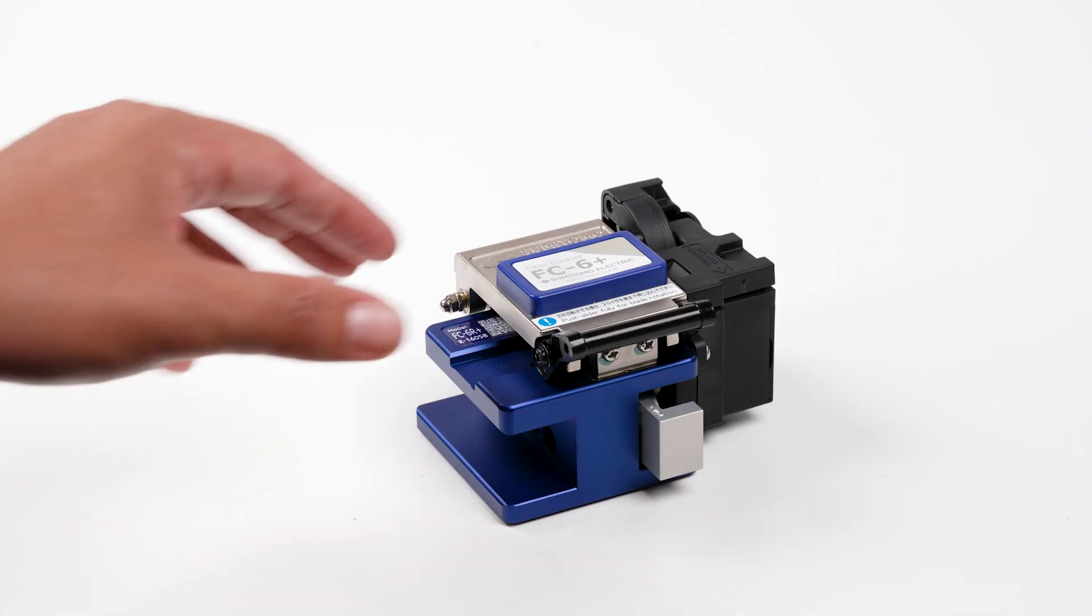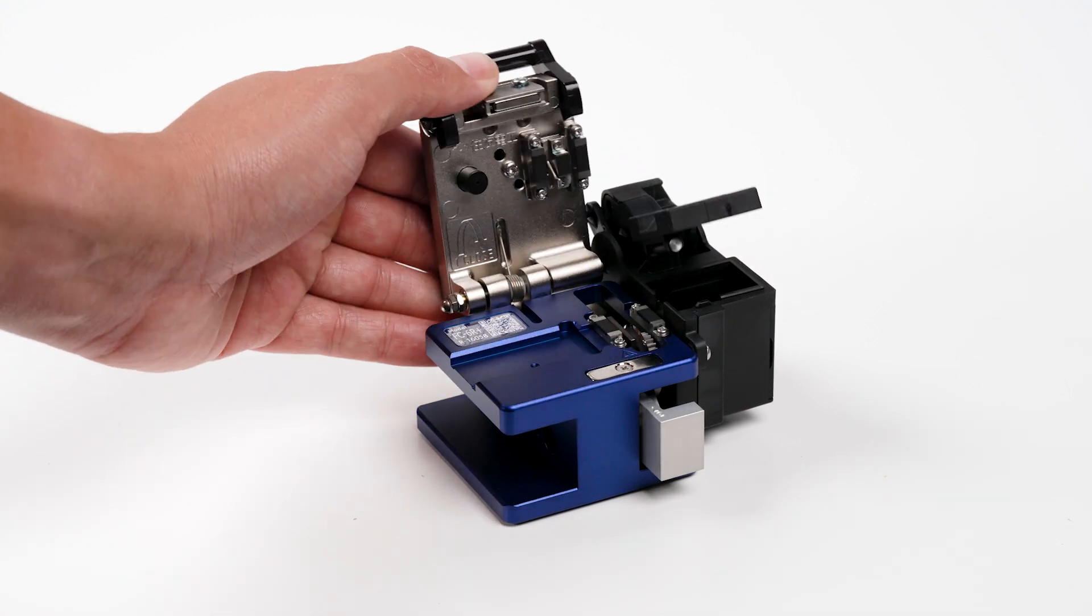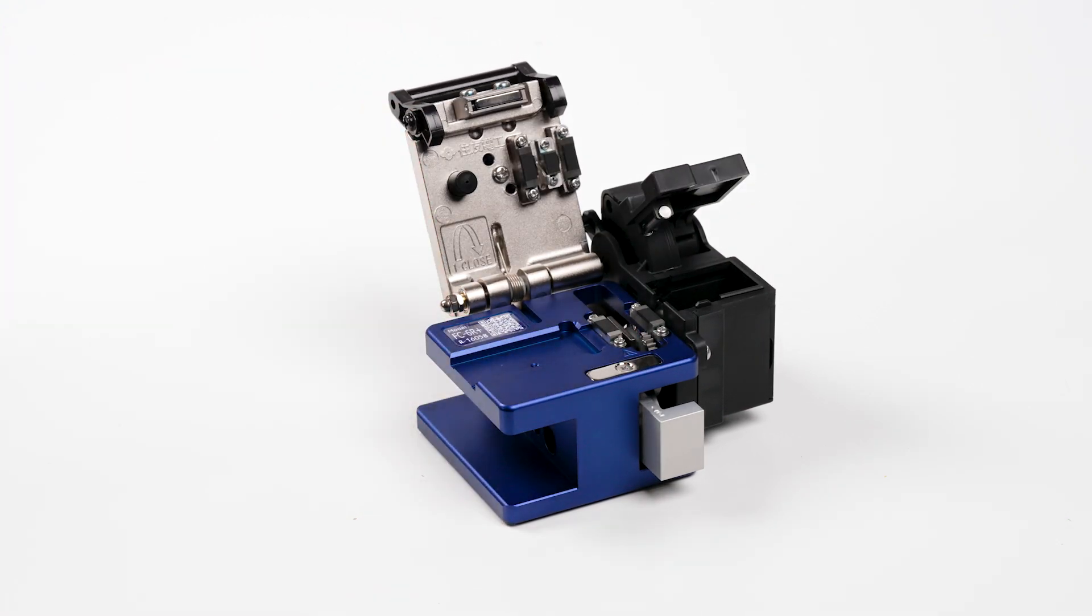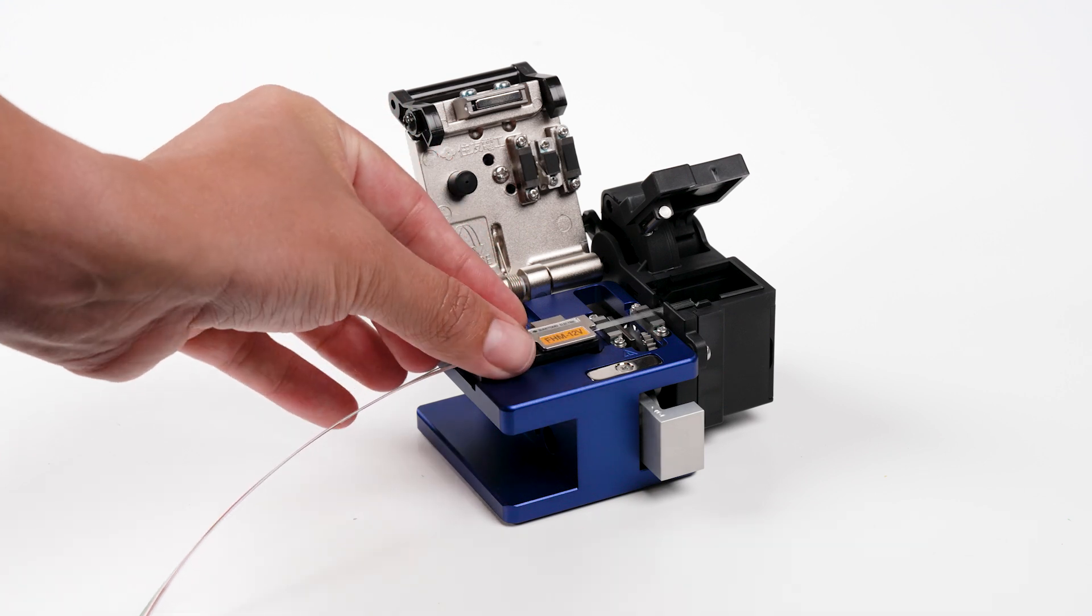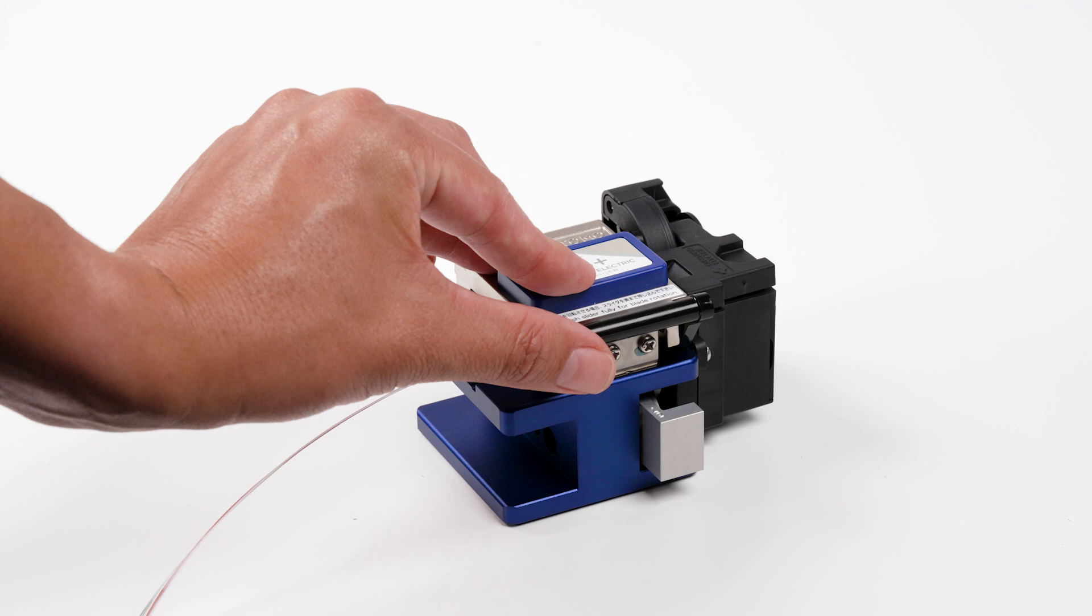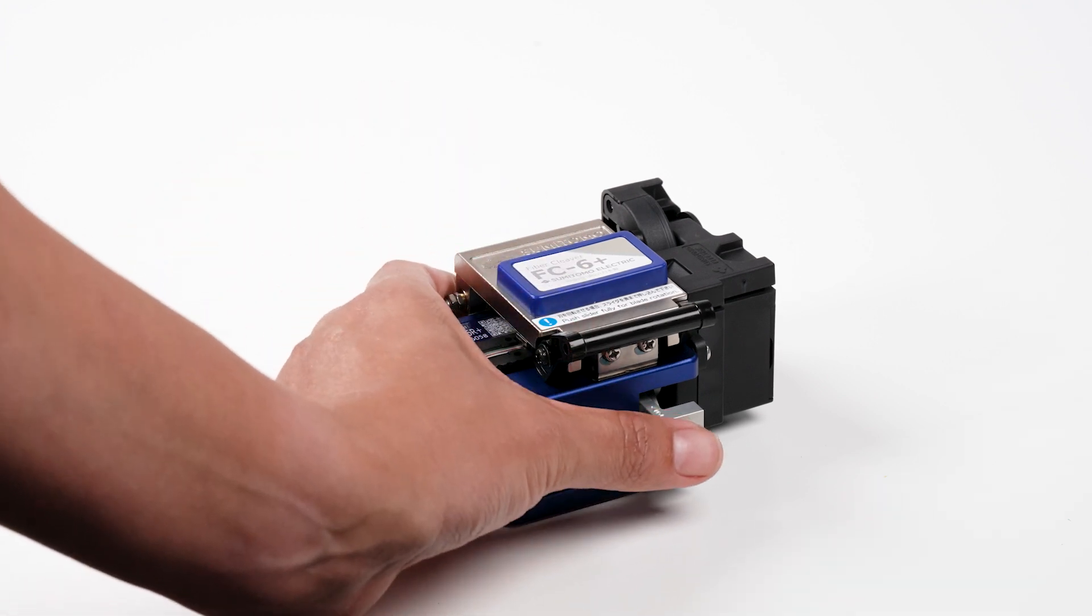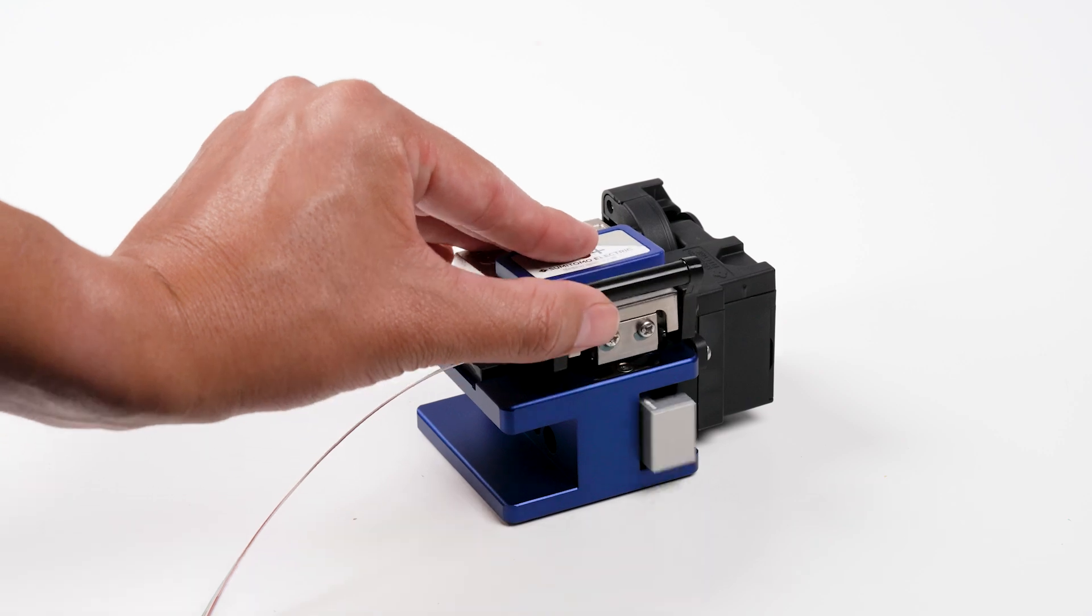Cleave the ribbon fiber using a Sumitomo Electric cleaver. Open the cleaver and set the scoring blade. Place and align the holder into the cleaver. The exposed glass cladding will rest on the lower cleaver rubber pads. Close the cleaver's hood and push the blade carriage inward fully. Open the hood and remove the holder.